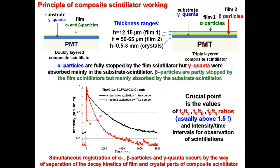The principle of composite scintillator operation is connected with different pathways for particles and quanta in composite scintillators based on epitaxial structures of garnet and other oxide compounds. Alpha particles and beta particles are stopped mainly in the film scintillator, but gamma quanta are stopped mainly in the large substrate. Simultaneous registration of alpha, beta, and gamma quanta occurs by separation of decay kinetics coming from the film and crystal parts of the composite scintillator. A crucial point here is the respective time value for registration of, for instance, alpha particles and gamma quanta.